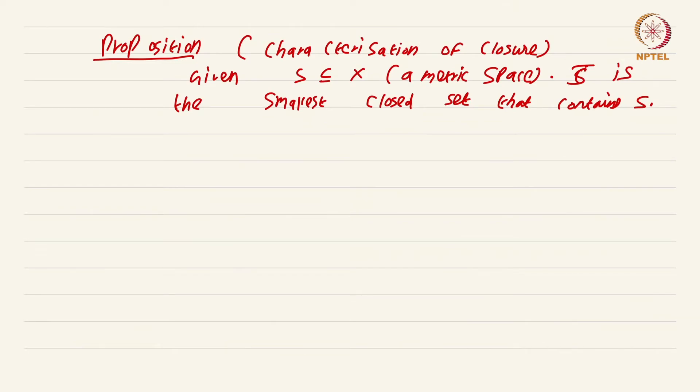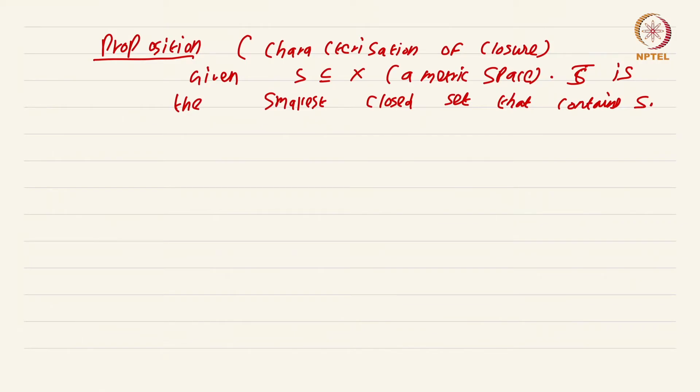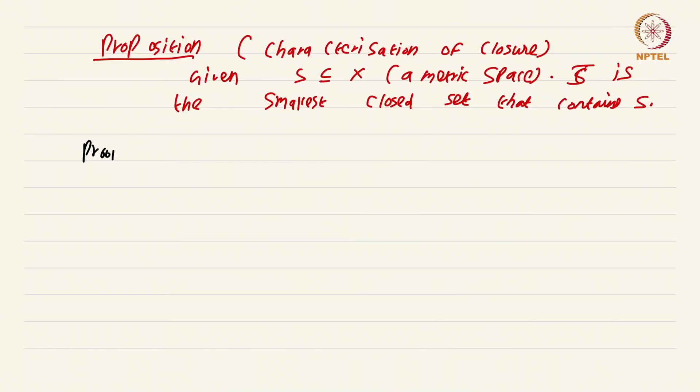So there are two parts to this. First is to show that S closure is in fact a closed set, which is, I mean if that were not the case, the nomenclature closure is a really stupid name. Second part is to show that S closure is the smallest closed set. So let us go ahead and prove this.